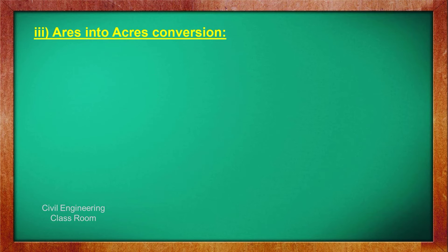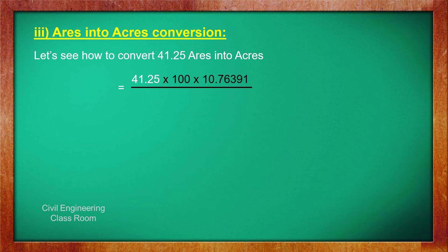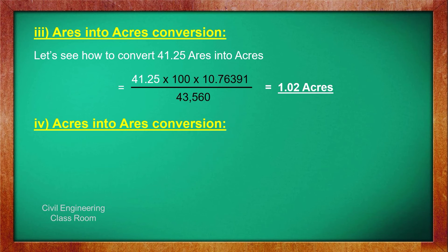The third conversion is ares to acres. Let's see how to convert 41.25 ares into acres. For that, we multiply 41.25 by 100 to get the value in square meters, then multiply that value by 10.76391 to get the value in square feet, then divide that whole value by 43,560. The answer is 1.02 acres.